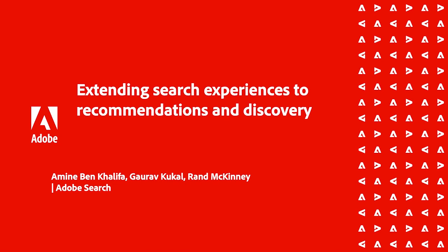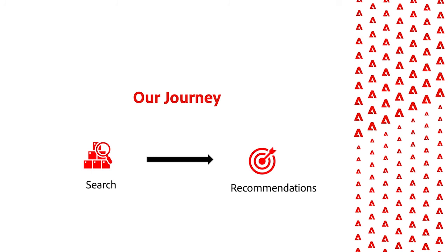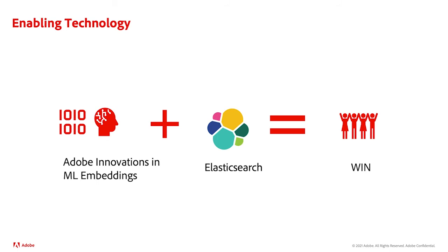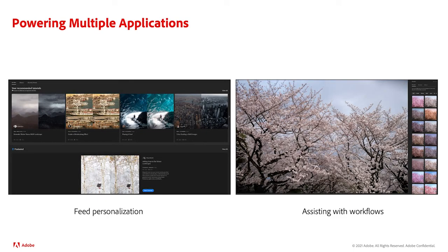You've just seen how we're using machine learning at scale, and those building blocks are being used for both search and recommendations. Over the last few years, the Adobe Search team has expanded from basic search to user recommendations and discovery experiences. In addition to helping creative users find assets, we're empowering them to discover personalized content and assisting them during key workflows. We combine the power of ML representations and Elasticsearch to enrich the overall user experience. In the areas of recommendations and discovery, we're using innovations in scalable ML embeddings to deliver two kinds of experiences: feed personalization and next action assistance.